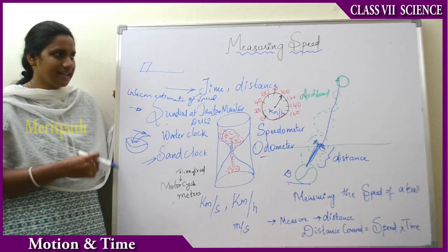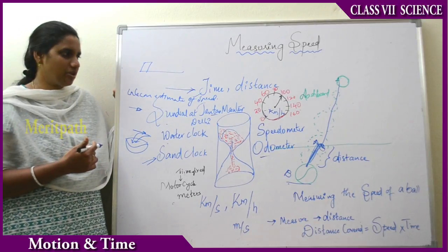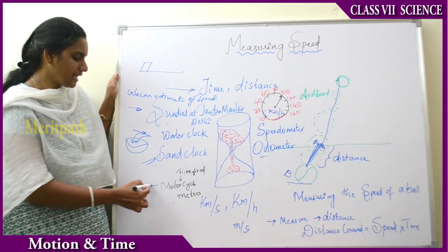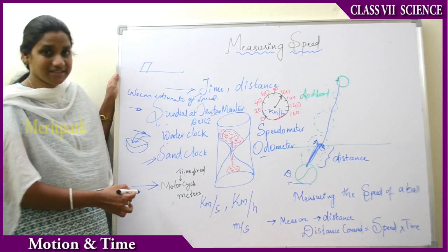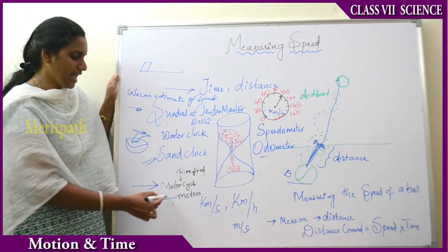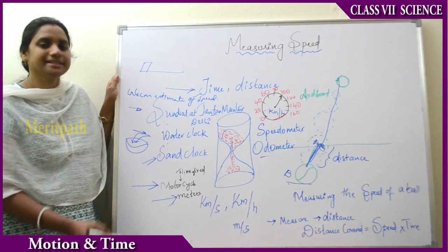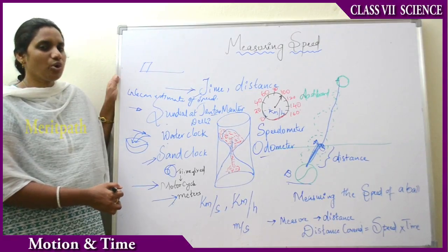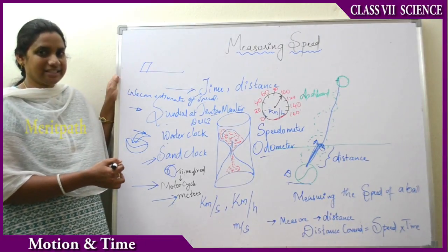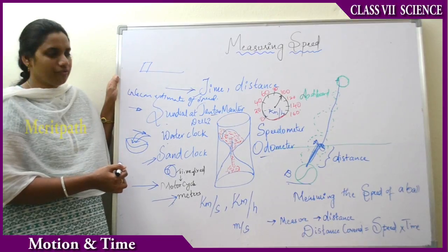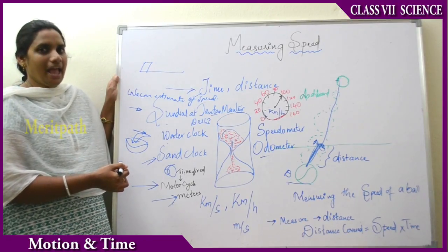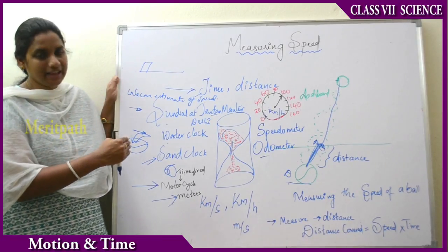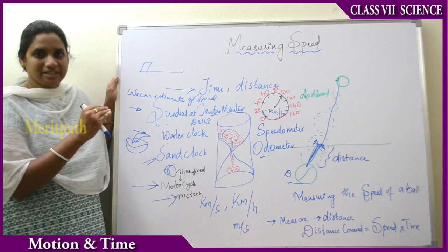On the surface of the ball, how much pressure we apply — that much resultant speed we will be measuring. That is the basic activity used to find out the speed. Now in motorcycles, meters are fixed — speedometer and odometer. These are the meters used to fix up the time on the motorcycles. They give us great information regarding the speed and caution us to drive below 100 speed during emergency areas.